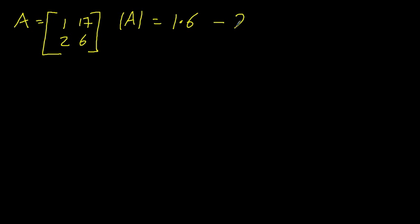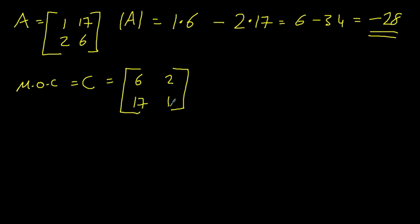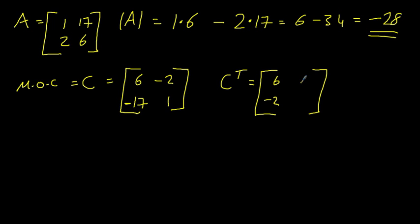The determinant of A equals one times six take away two times seventeen, which equals six take away thirty-four, which equals minus twenty-eight. The matrix of cofactors C: one sees six, seventeen sees two, two sees seventeen, and six sees one — looking diagonally. The two off-diagonal elements have their signs changed. To find the adjugate we make the first column a row and the second column a row, giving: six, minus seventeen going down and minus two, one going down.